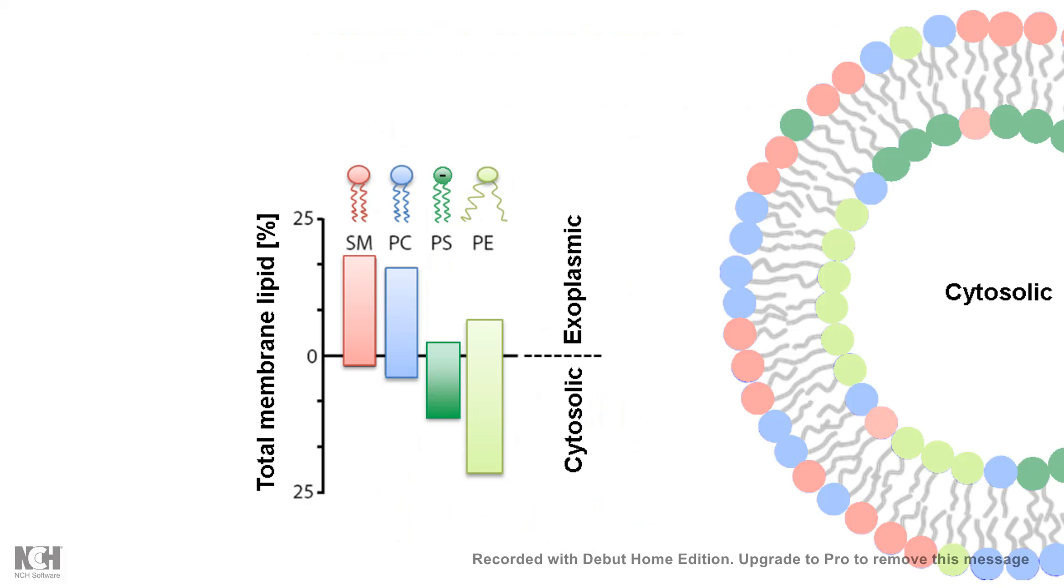Forget about the organelles. If we just talk about the inner leaflet of the membrane versus the outer leaflet of the membrane, there is also heterogeneity in terms of distribution of the phospholipids.